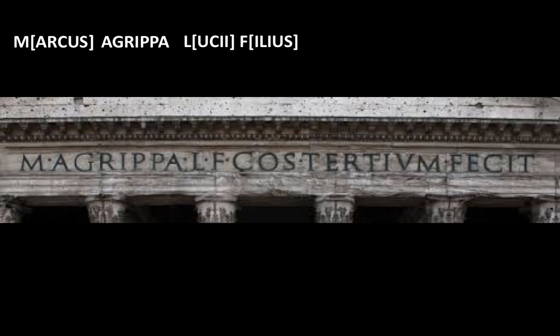Then there are the three letters C, O and S. This is an abbreviation, or rather a contraction, for the Latin word Consul. The Consul was the main political post in Republican Rome. Then we have the word Tertium. Notice how in the Latin alphabet the letters V and U are identical. Tertium means third. Then we have the word Fecit, which is the third person singular of the perfect tense indicative of the verb Facere, which means to make.